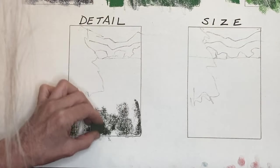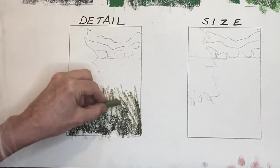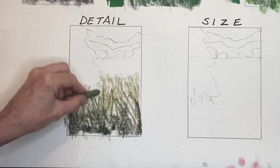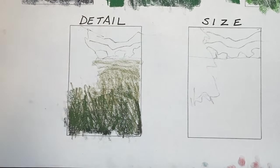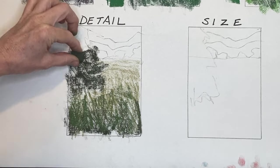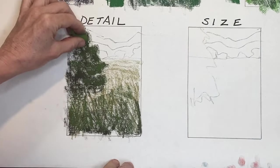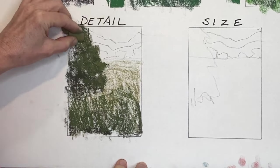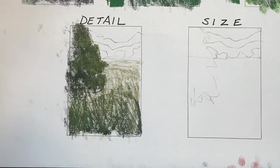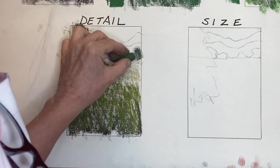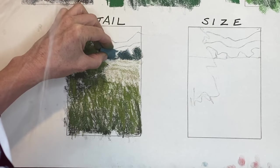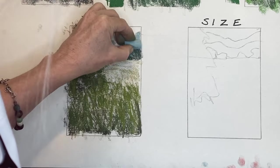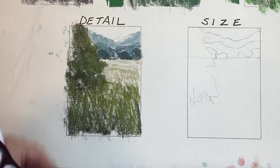Not only do things get less detailed in the background, they get a little out of focus. Like in photography, an aperture setting can make things in the foreground very clear while the background is fuzzy — and that fuzziness increases as distance increases. The most detail is almost always in the foreground. You won't see individual leaves on distant trees, but you may see more detail in foreground trees.